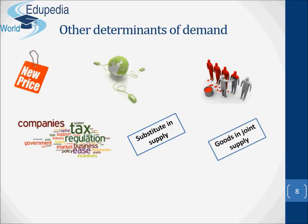The profitability of goods in joint supply. Sometimes when one good is produced, another good is also produced at the same time. These are said to be goods in joint supply. An example is the refining of crude oil to produce petrol — other grade fuels will be produced as well, such as diesel and paraffin. If more petrol is produced due to a rise in demand and hence its price, then the supply of these other fuels will rise too.